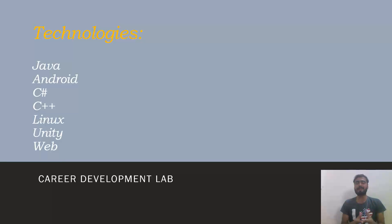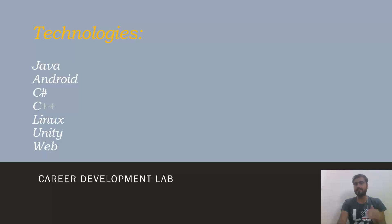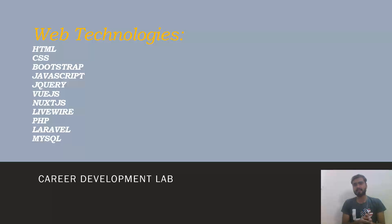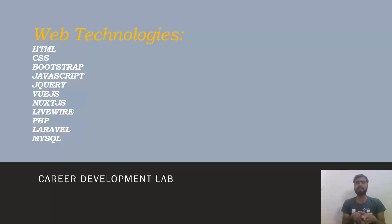Now it's time to know who I am. My name is Diab Niyazi and I am a 25-year-old IT graduate developer who has worked on different technologies like Java, Android, C#, C++, Linux, and Unity. I'm still working on web technologies where I have a strong grip on HTML, CSS, Bootstrap, JavaScript, jQuery, Vue.js, Nuxt.js, Livewire, PHP, Laravel, and MySQL. I have now been totally focused on Laravel for many years.